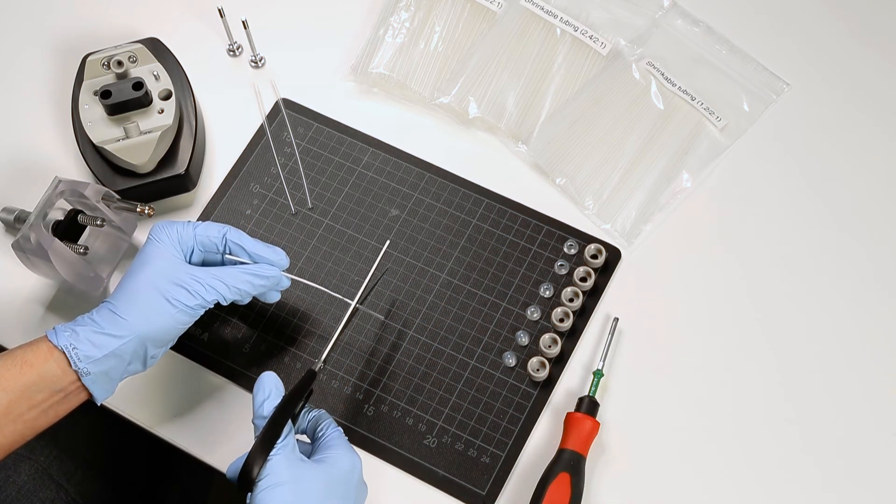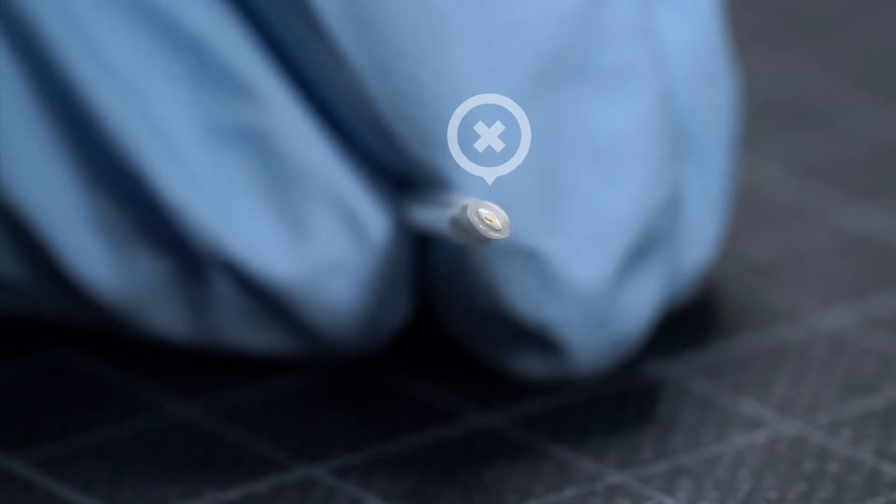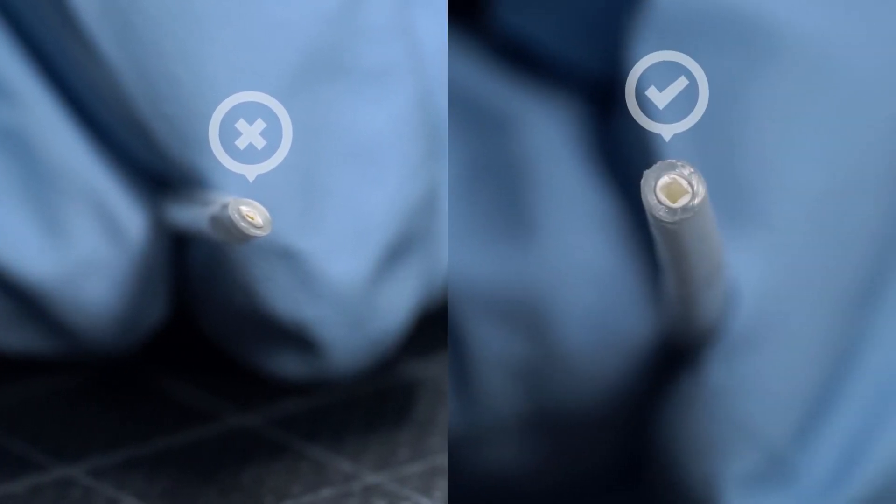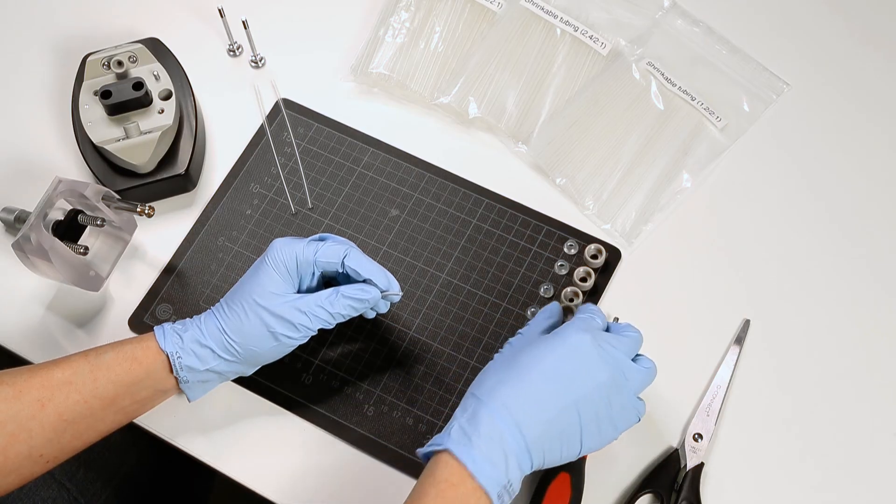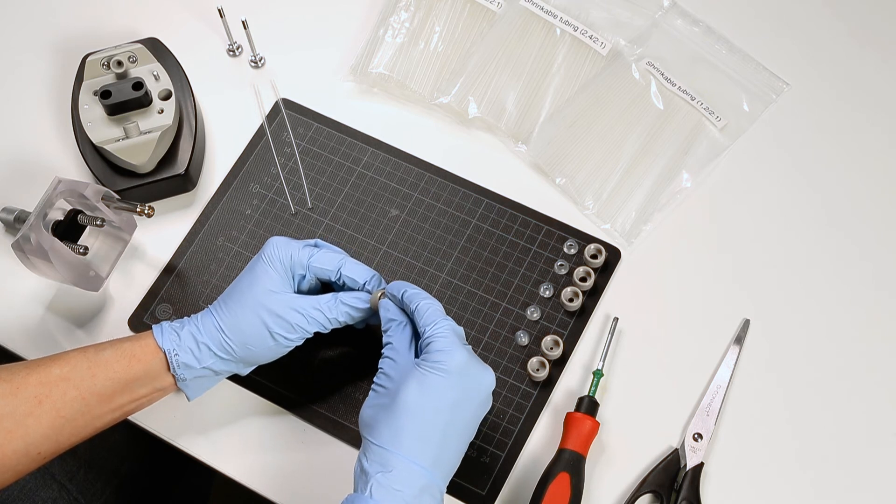Cut one end of the heat shrink tube with the hollow fiber membrane carefully in order not to squeeze the membrane. Now you can assemble the measuring cell in the same way as for tube samples, as shown earlier in this video.